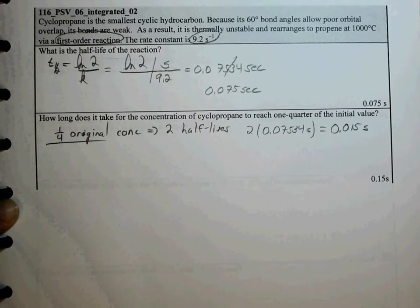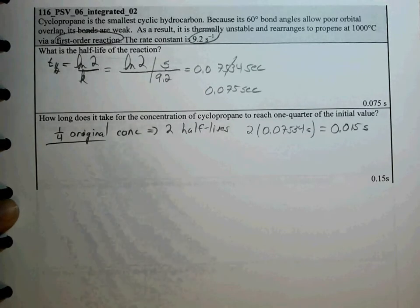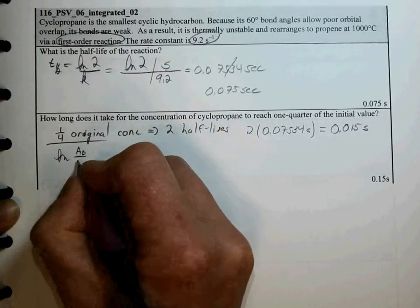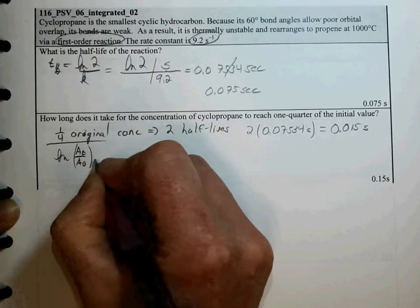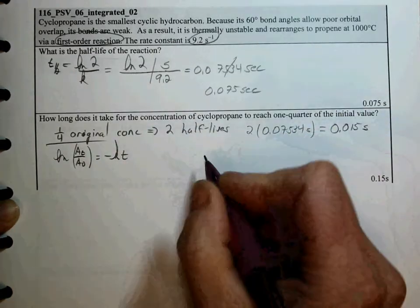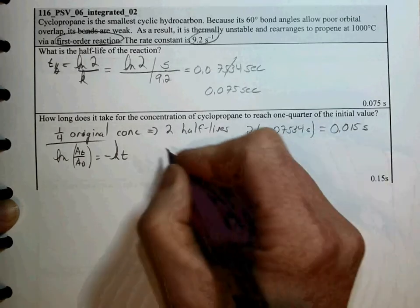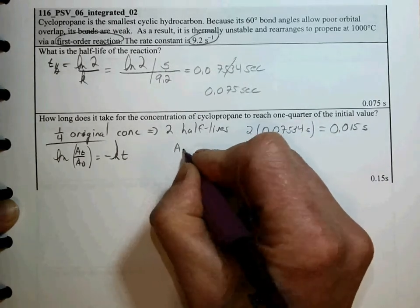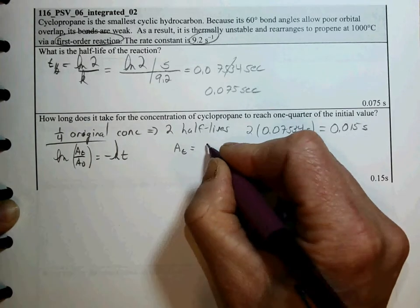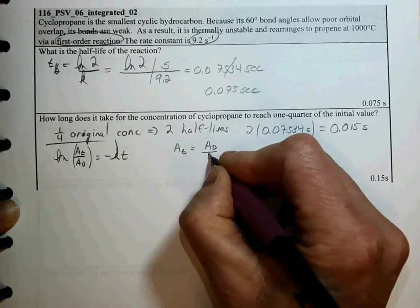Another way to solve this is to use the integrated first-order rate law. ln of A of t over A0 is equal to minus kt. So for 1 quarter of the initial value, we'd have A of t is going to be equal to A0 over 4.